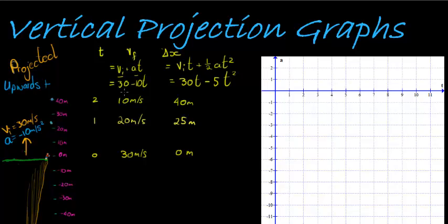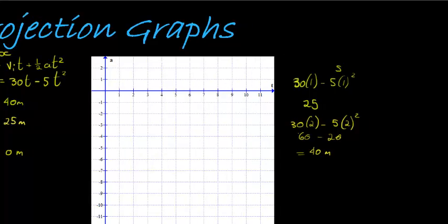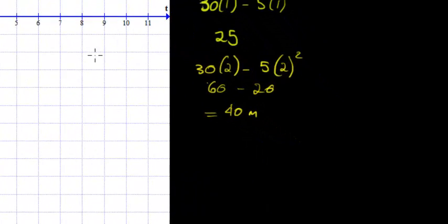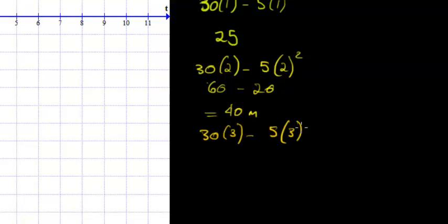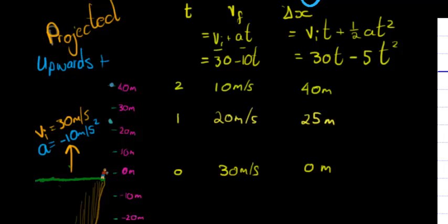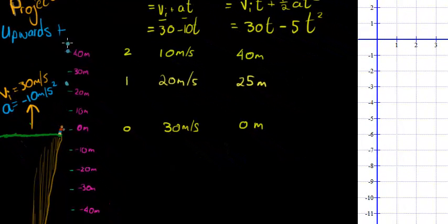The next velocity is going to be 0 meters per second, as I'm losing 10 meters per second every second. After three seconds: 30 times 3 minus 5 times 3 squared equals 90 minus 45, which is 45 meters. So in the last second, I only traveled 5 meters up - from 40 up to 45. After three seconds, I'm traveling at 0 meters per second and I'm at 45 meters up in the air.